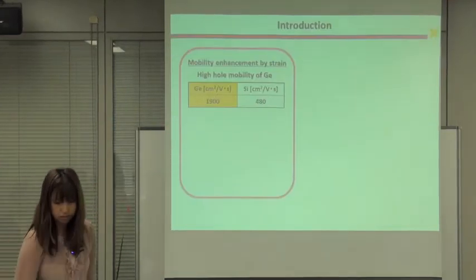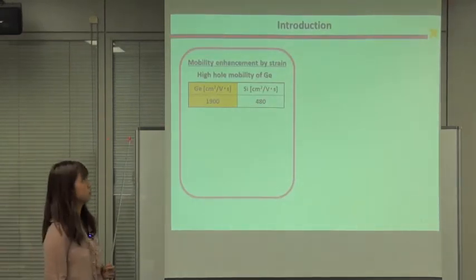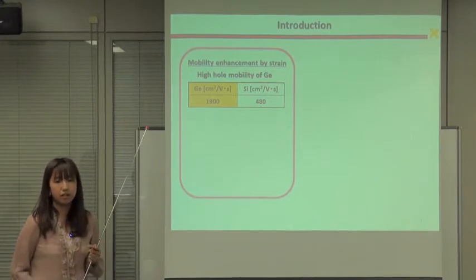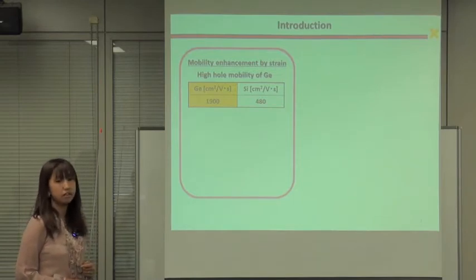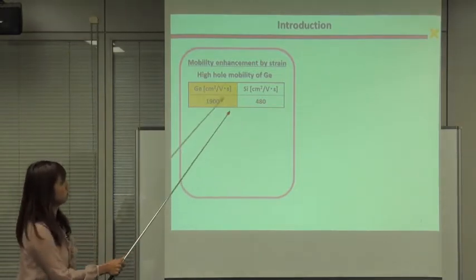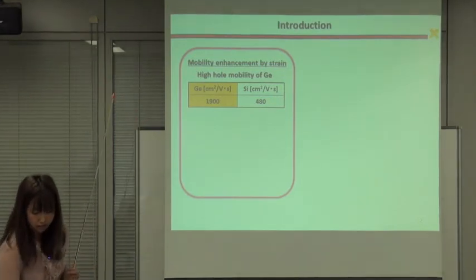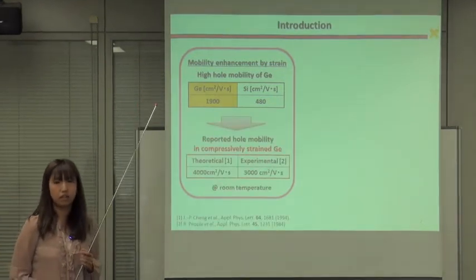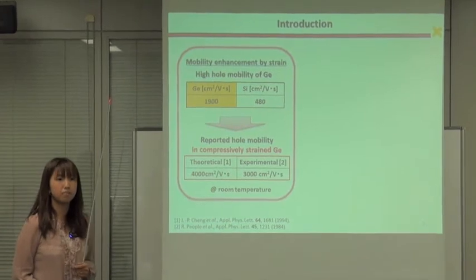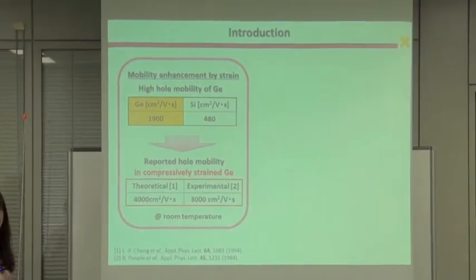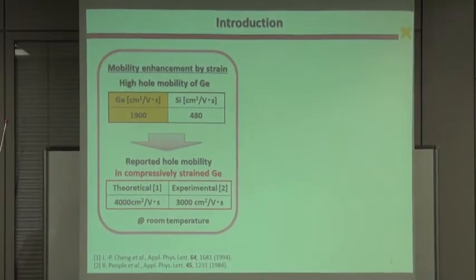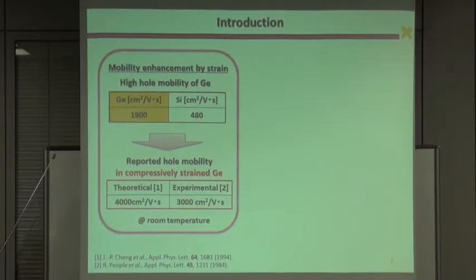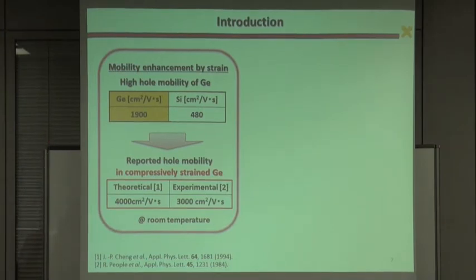I'd like to start my talk with an introduction. Germanium has inherently high hole mobility, which is about 4 times higher compared to silicon at room temperature. And especially the hole mobility of germanium can be enhanced by compressive strain by approximately a factor of 2, even at room temperature. So we focus on that high hole mobility of strained germanium.